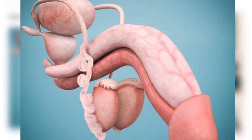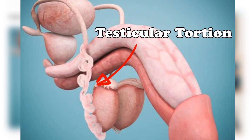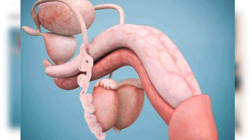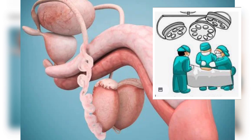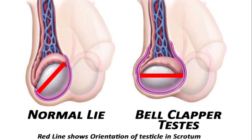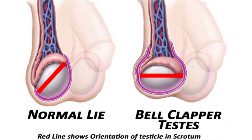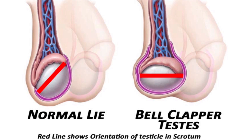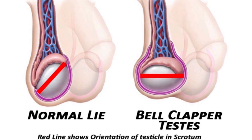Now we come to testicular torsion. Testicular torsion is a surgical emergency. The first risk factor is a higher attachment of the tunica vaginalis, which is called bell clapper testes. Due to this orientation, the testes can rotate freely due to its higher attachment.